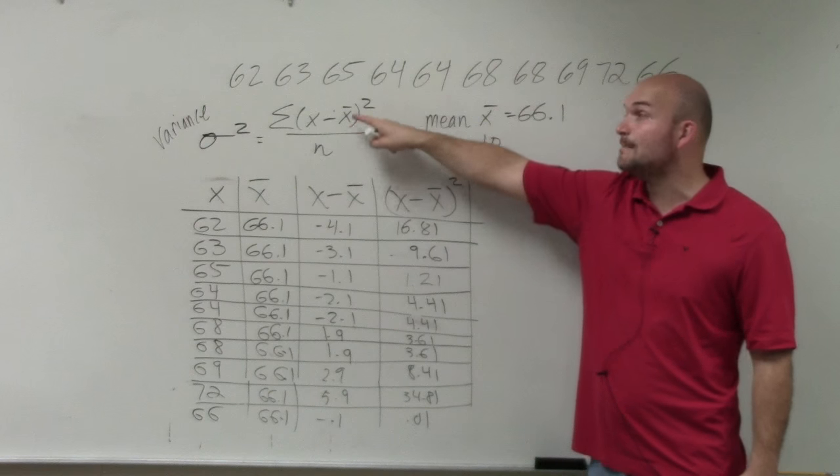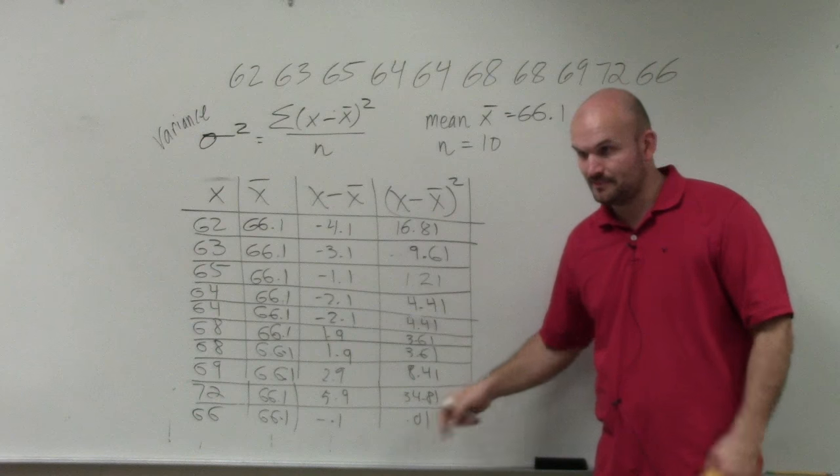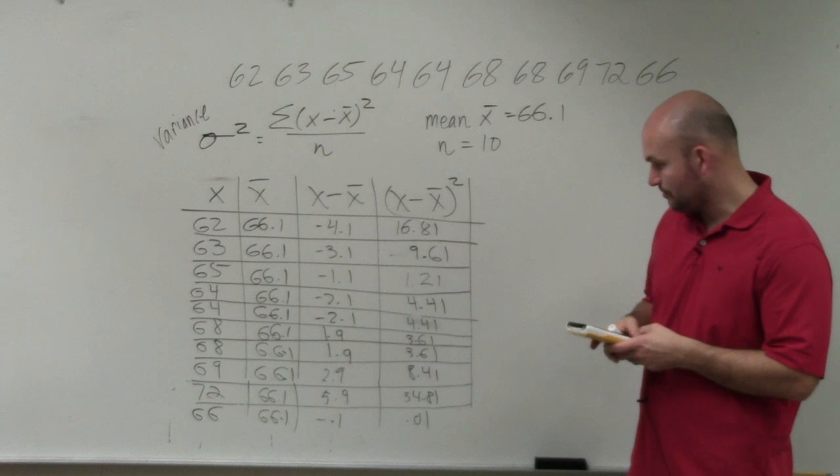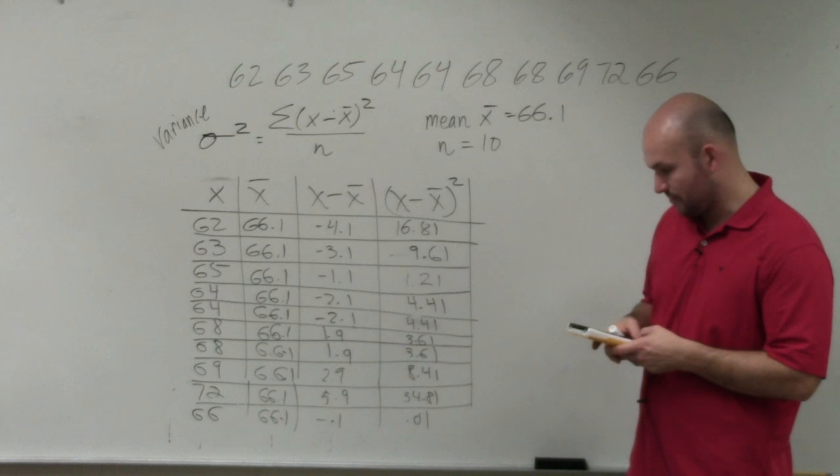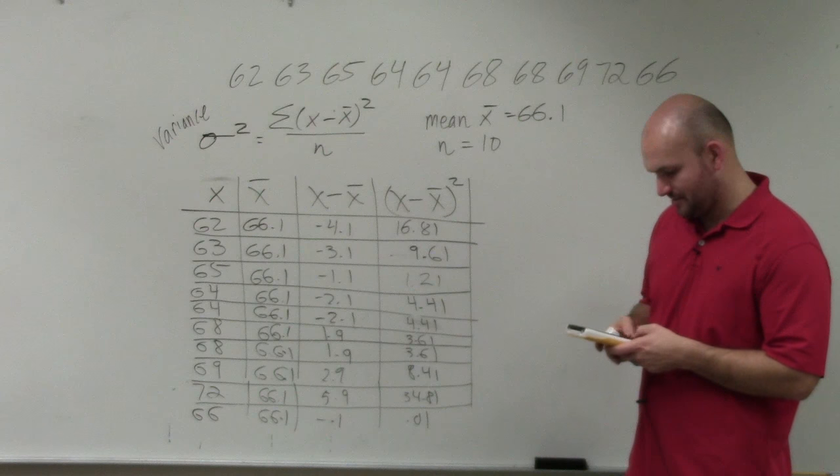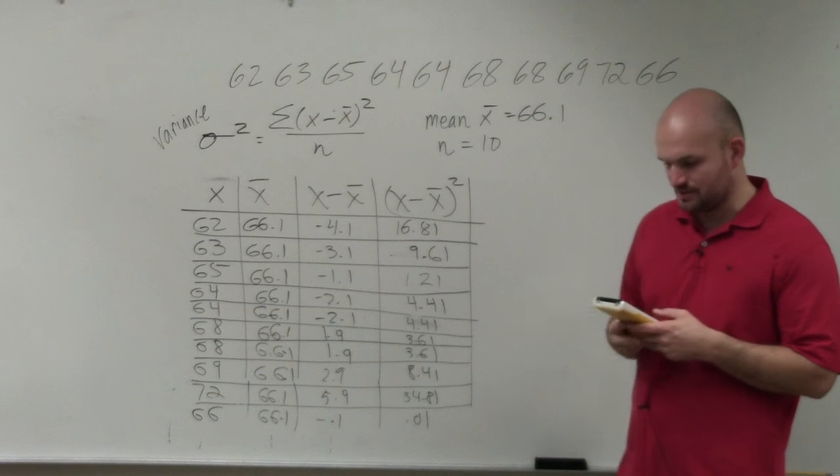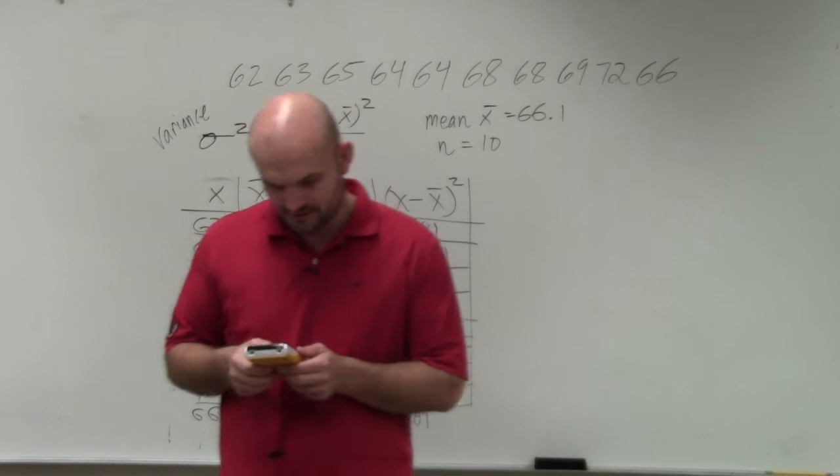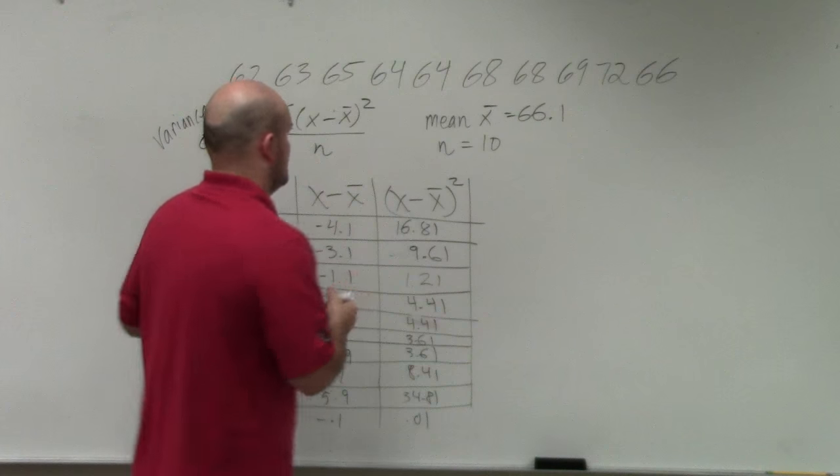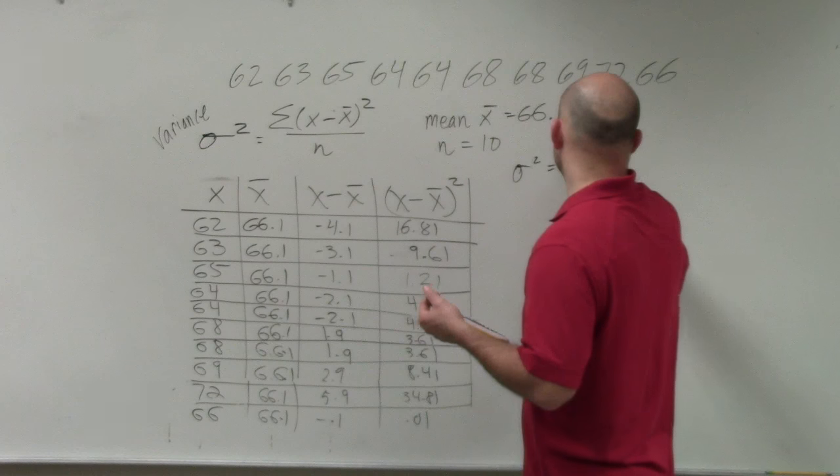Well, now the formula says we need to find the summation of all of these values. So we need to add all of these values. So going back to my calculator, 16.81, plus 9.61, plus 1.21, plus 4.41, plus 4.41, plus 3.61, plus 3.61, plus 8.41, plus 34.81, plus 0.01. And as long as I type them into my calculator correctly, which I'm just going to double check. So just take it slowly, just to make sure you guys do this correctly, because you can miss the decimal point. I get, so my variance is equal to the summation, which ends up being 86.9.